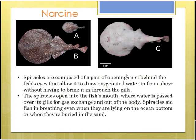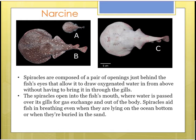Spiracles are a pair of openings just behind the eyes of this fish which allow it to draw oxygenated water in from above without having to bring it in through the gills. The gill slits are placed on the ventral side. The spiracles open to the fish's mouth where water passes over the gills for gas exchange. This helps the fish breathe even when lying on the ocean bottom or buried in the sand.